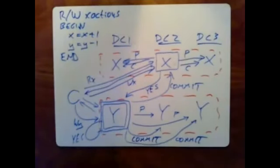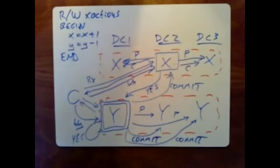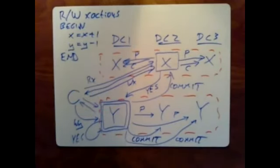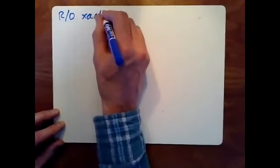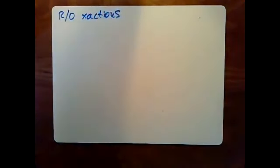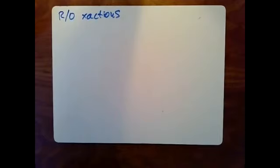If you know in advance that all operations in a transaction are guaranteed to be reads, Spanner has a much faster, more streamlined, much less message-intensive scheme for executing read-only transactions. Spanner eliminates two big costs: first, it reads from local replicas — instead of maybe dozens of milliseconds cross-country, a read from a local replica may take a small fraction of a millisecond. But any given replica may not be up-to-date, so there has to be a story for that.